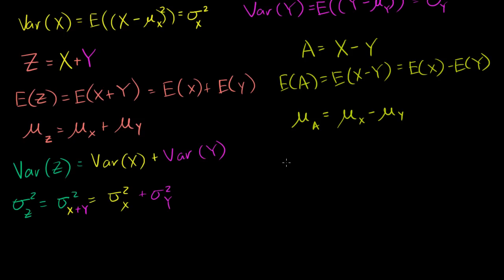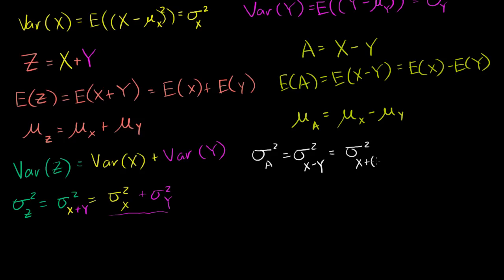What I want to show is that the variance of random variable a is this exact same thing — and that's the interesting part, because you might ask why it isn't the difference. The variance of a equals the variance of x minus y, which equals the variance of x plus negative y. Using the property above, that equals the variance of x plus the variance of negative y. What I need to show is that the variance of negative y is the same as the variance of y.